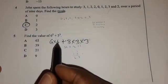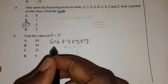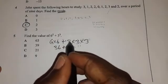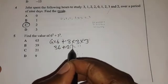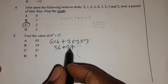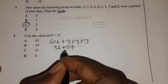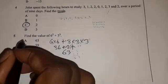So six times six is 36 plus three times three, nine times three, 27. So 36 plus 27 is 63. So the answer is A.